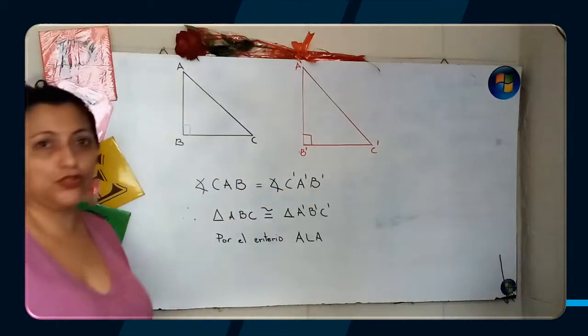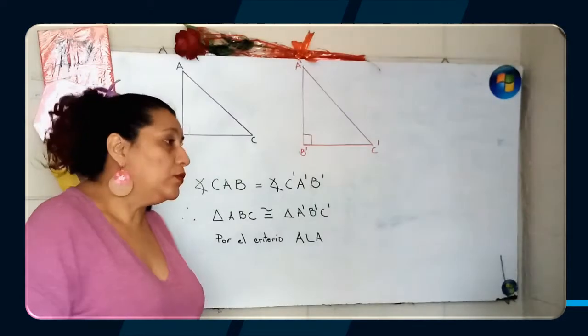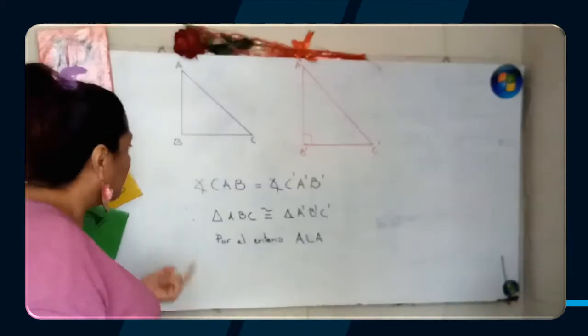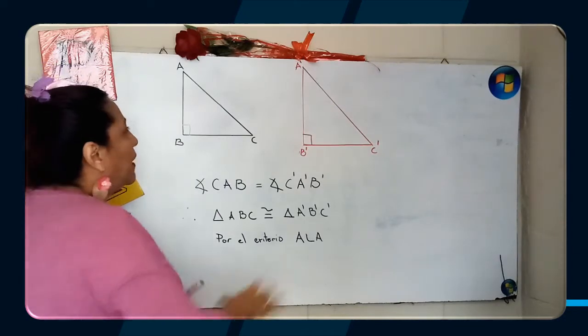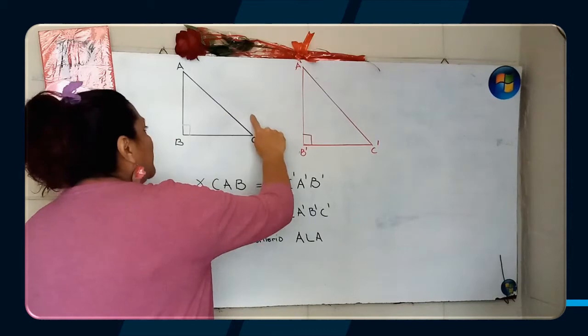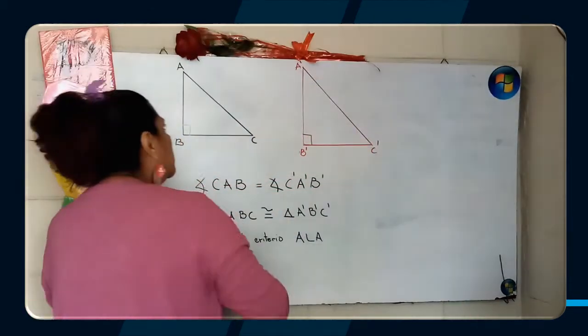Entonces nosotros podemos hacer uno de los criterios de congruencia de triángulos. Veamos qué podemos hacer. Primero identificamos uno de sus lados. El lado más largo en ambos triángulos es el mismo.